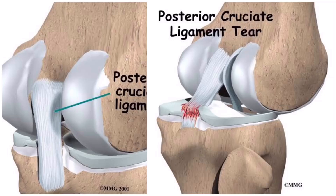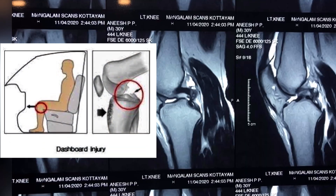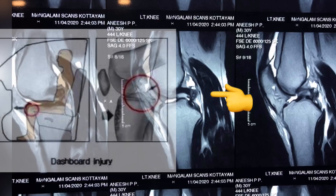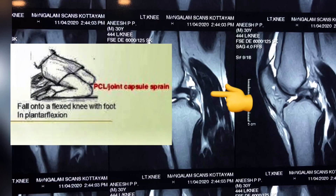The PCL prevents posterior translation of the tibia. Isolated PCL injury occurs due to a direct blow, such as dashboard injuries, or indirectly by falling on a hyperflexed knee with a plantargrade foot.